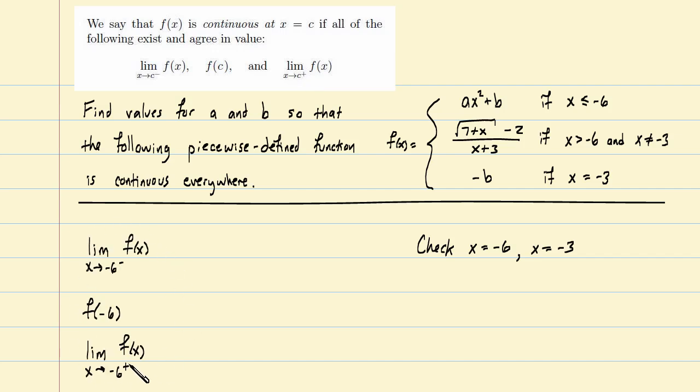So writing these three things down and looking at the first one. If we are just left of negative 6, what is our function? Which piece applies to those particular x values? Well, if we're left of negative 6, then we're slightly less than that, so it looks like this first piece applies. Of course, this particular limit is a limit of a polynomial. And we know limits of polynomials can be evaluated just by plugging in the x value that we are approaching. So this should equal 36, that's negative 6 squared, a plus b.